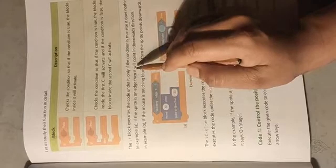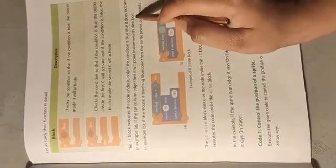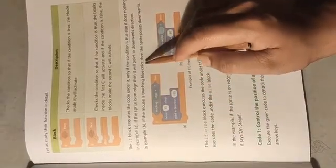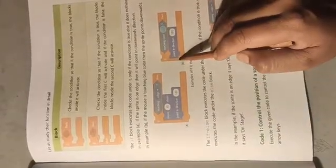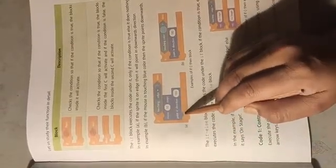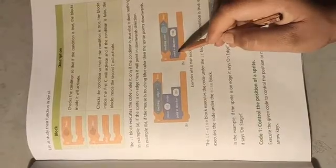An example: if the sprite is on the edge, it will point in the downward direction. In example B, if the mouse is touching the blue color, then the sprite points downwards. Here the color becomes blue, and when we touch the blue color the sprite points downward.